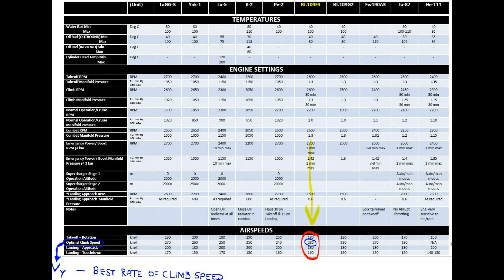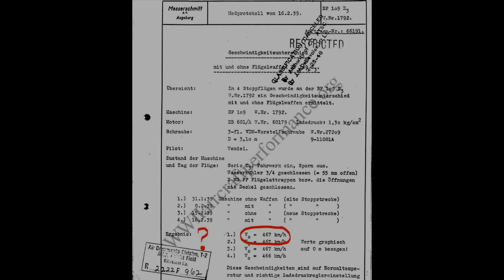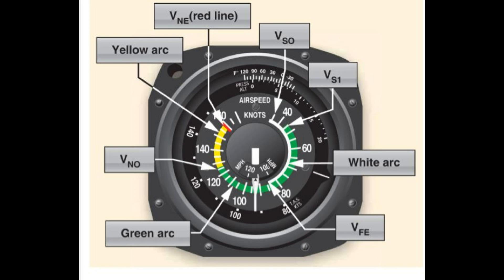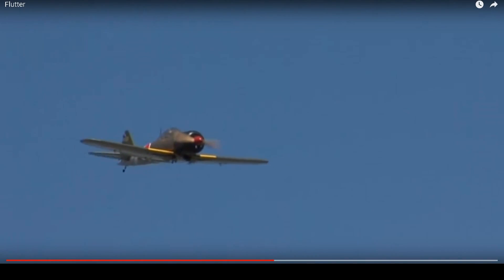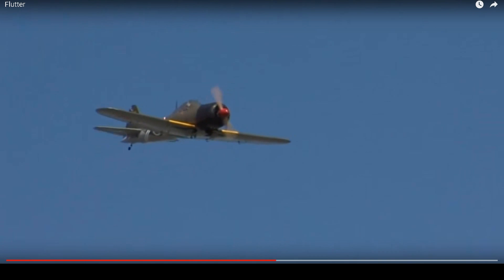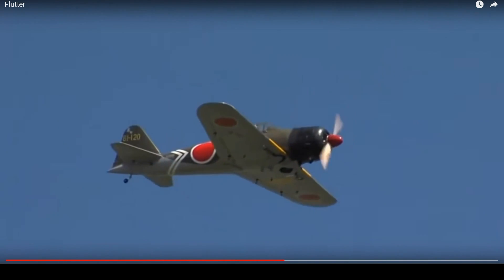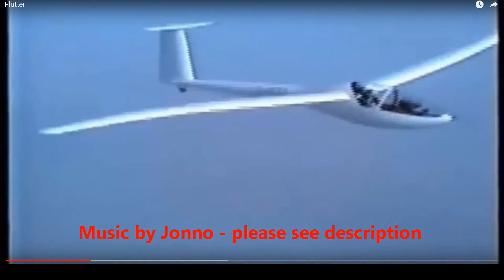Today I'll cover a few of the V-speeds that are important to us in the game, and I'll include a link in the description for more information. The airframe is designed to withstand certain g-force loads, but it's the air pressure that will ultimately tear an aircraft apart if it exceeds certain speeds. Here are some examples of aerodynamic flutter, which is just one of the problems we may run into at excessive speed.